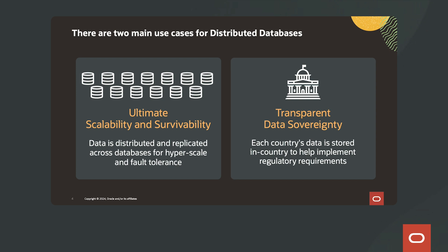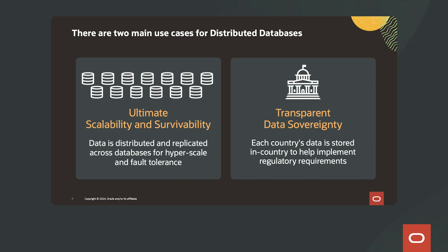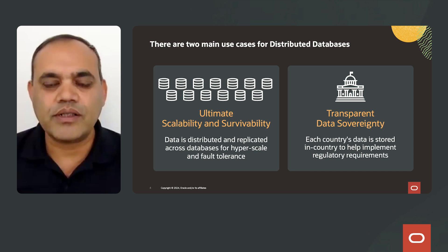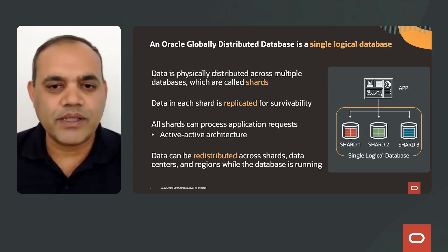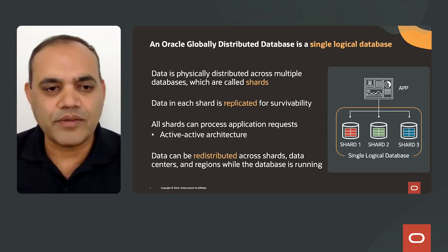There are two main use cases for distributed databases. The first is ultimate scalability and survivability, where data is distributed and replicated across databases for hyperscale and fault tolerance. The second use case is transparent data sovereignty, where each country's data is stored in-country to help implement regulatory requirements. An Oracle Globally Distributed Database is a single logical database. Data is physically distributed across multiple databases called shards. Data in each shard is replicated for survivability, and all shards can process application requests, enabling an active-active architecture.